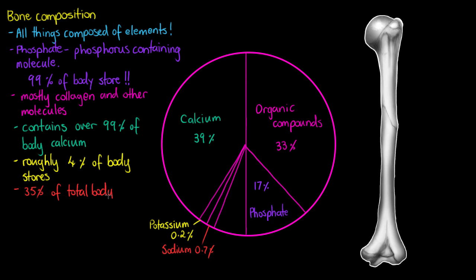If we have a look at this pie chart here, we can see that we've got 39% calcium, 17% phosphate, 33% of our organic compounds, and below 1% of all of our other elements.